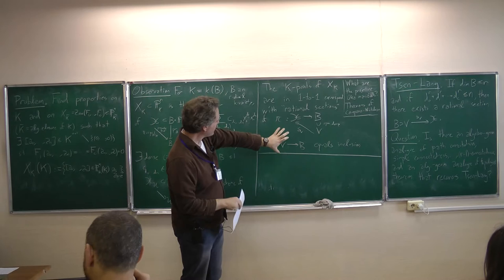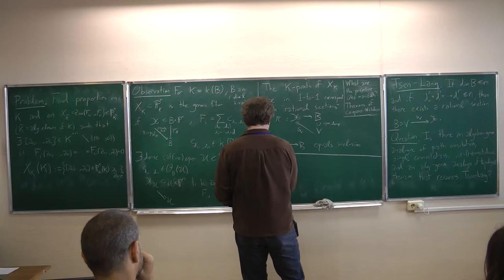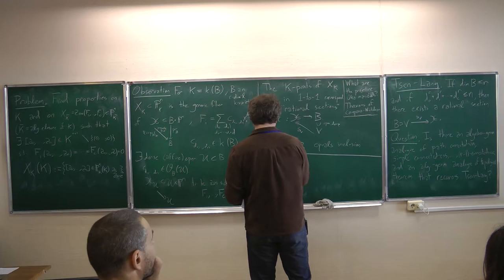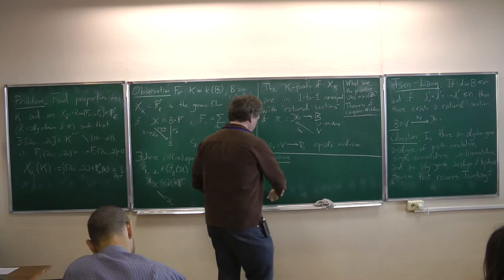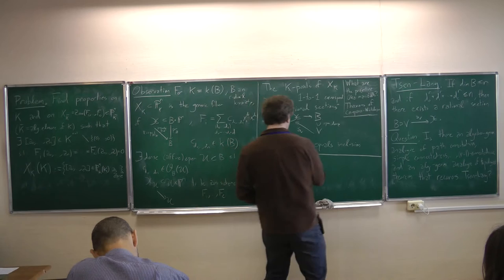Let me mention obstructions. This Séré-Lang result is a positive result — it says there does exist a rational section. But in general, there are necessary conditions. First of all, there must everywhere exist local points.